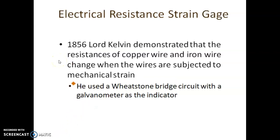In 1856, Lord Kelvin demonstrated that the resistance of copper wire and iron wire changes when the wires are subjected to mechanical strain. That is a property of materials — to change resistance with respect to change in length and change in cross-section.